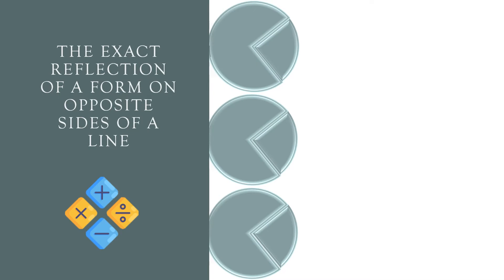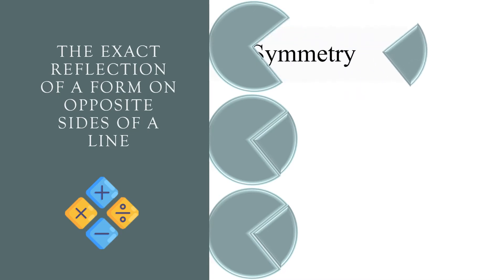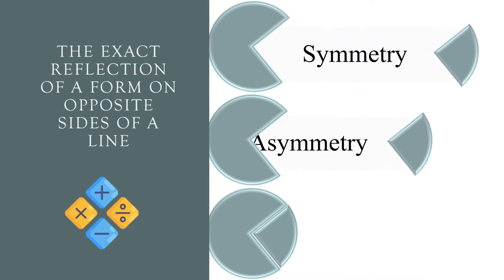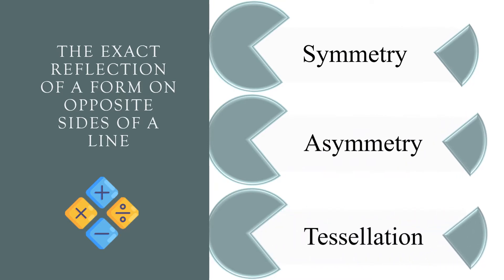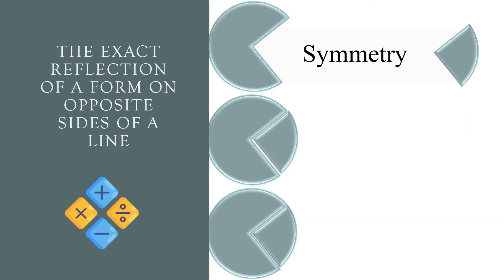The exact reflection of a form on opposite sides of a line. Symmetry, asymmetry, or tessellation? The correct answer is symmetry.